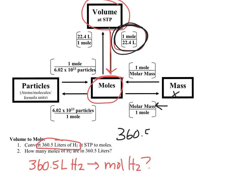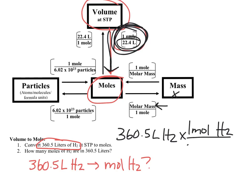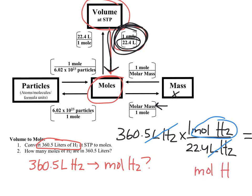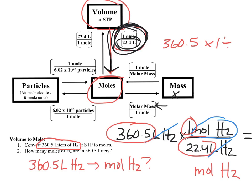I take 360.5 liters of hydrogen gas and use the conversion: one mole of hydrogen on top, 22.4 liters on the bottom, because for every one mole of hydrogen at STP there's 22.4 liters. Liters cancel out, leaving moles of hydrogen. The math: 360.5 times 1 divided by 22.4 equals 16.09 moles of hydrogen.